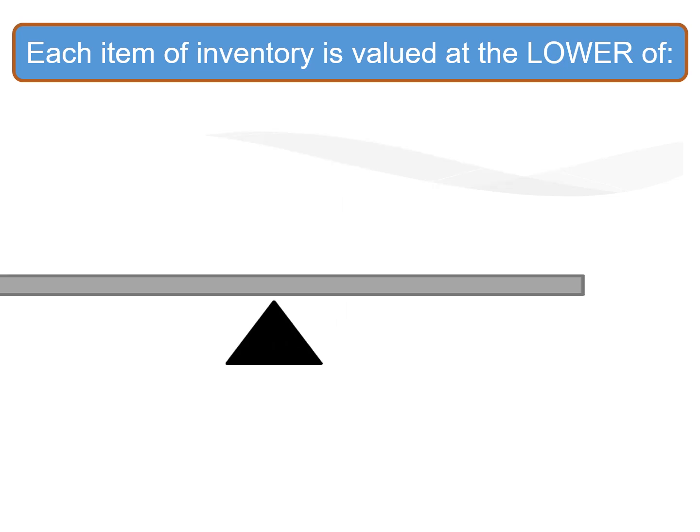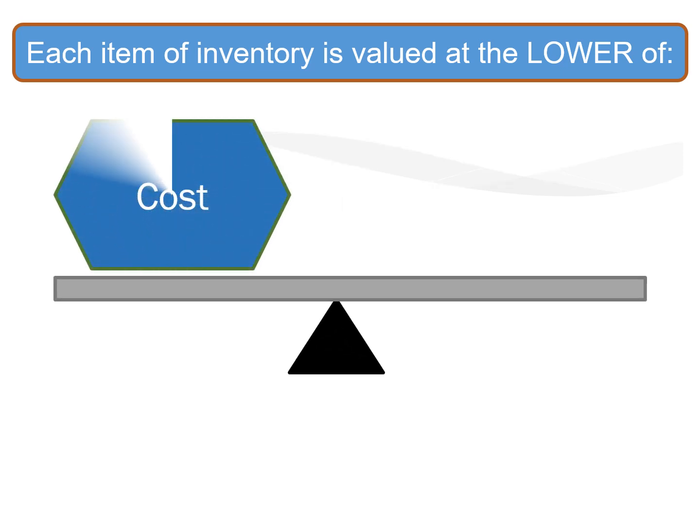Each inventory item is valued at cost — the amount we paid to obtain that product. For example, if you buy a shirt at 20 pesos, that's the cost. For a YouTube channel, the cost would be the electricity, the time input, and if we hire a content creator or graphics creator — those all pertain to the cost. However, inventory can also be valued at net realizable value because some inventory becomes obsolete over time.